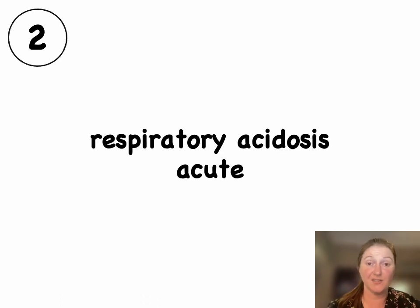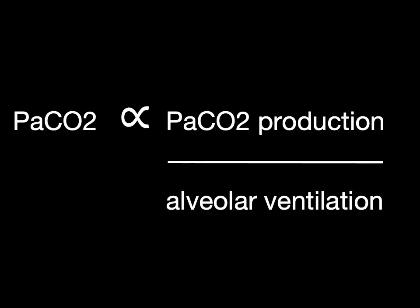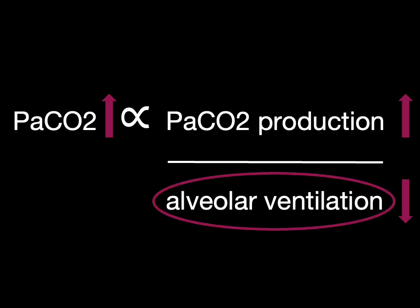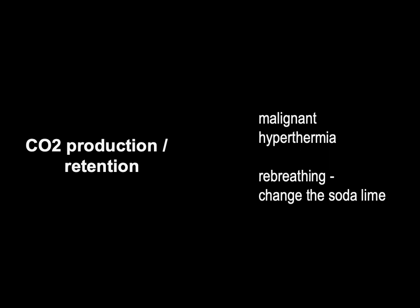So she has an acute respiratory acidosis. I'm going to go through some of the things that cause respiratory acidosis. We can see the PaCO2 on a blood gas when we do an arterial stab. The level of CO2 is related to the level of CO2 production and alveolar ventilation. PaCO2 can be raised when there's increased CO2 production or decreased alveolar ventilation. For example, the patient might have malignant hypothermia which increases CO2 production, or they might be re-breathing — for example intraoperatively if the anaesthetist forgot to change the soda lime.